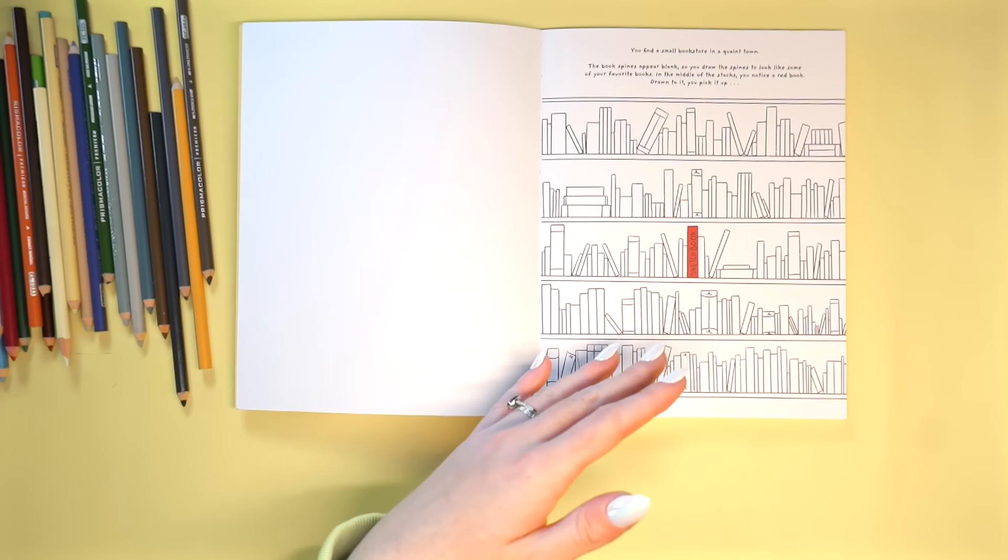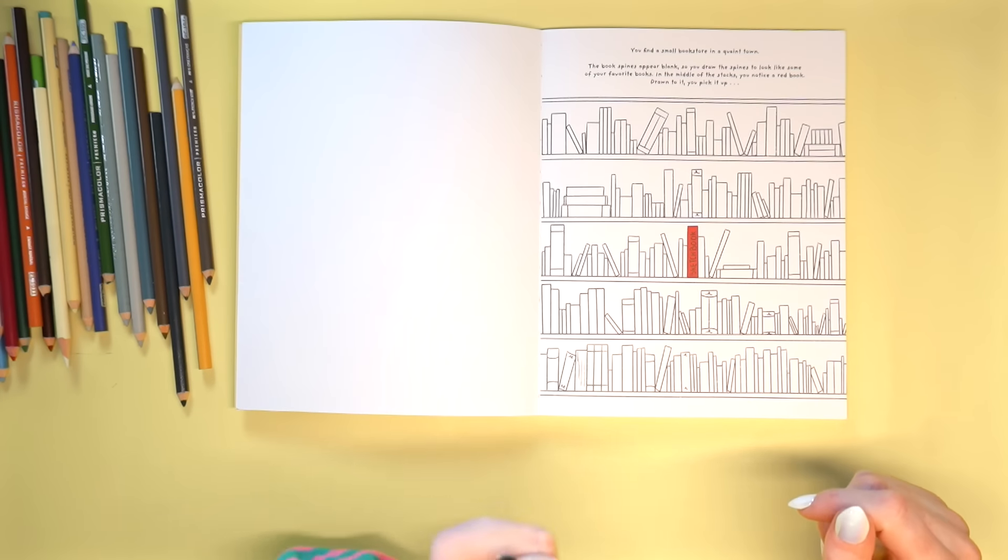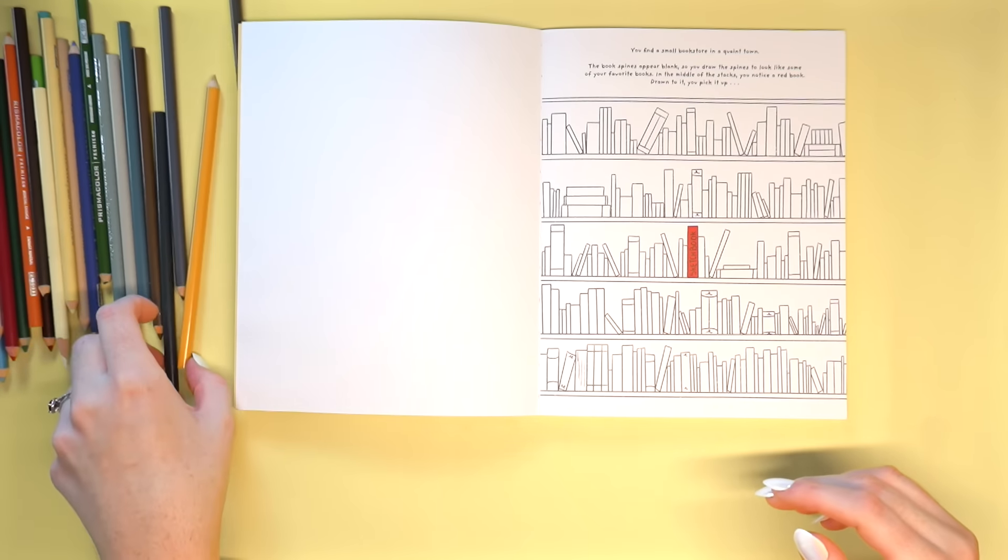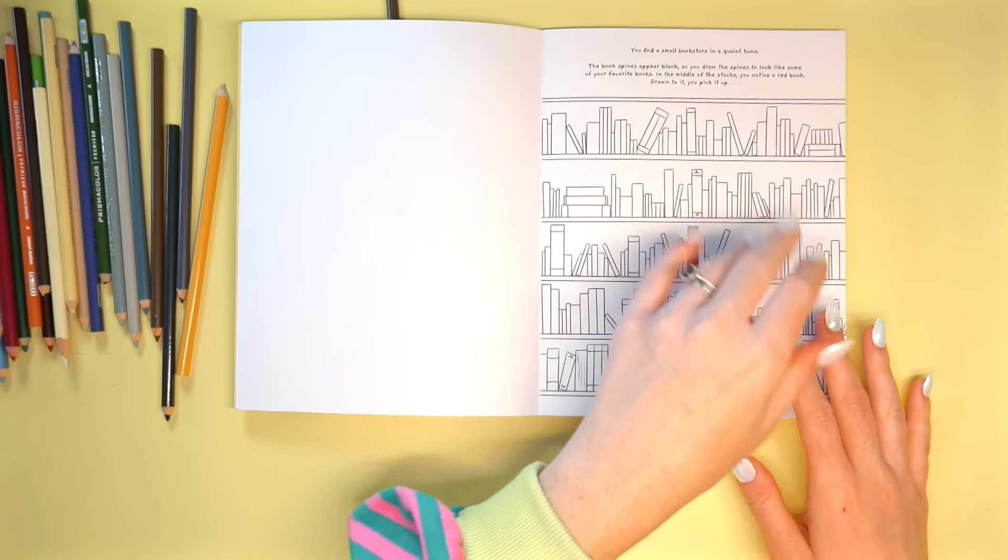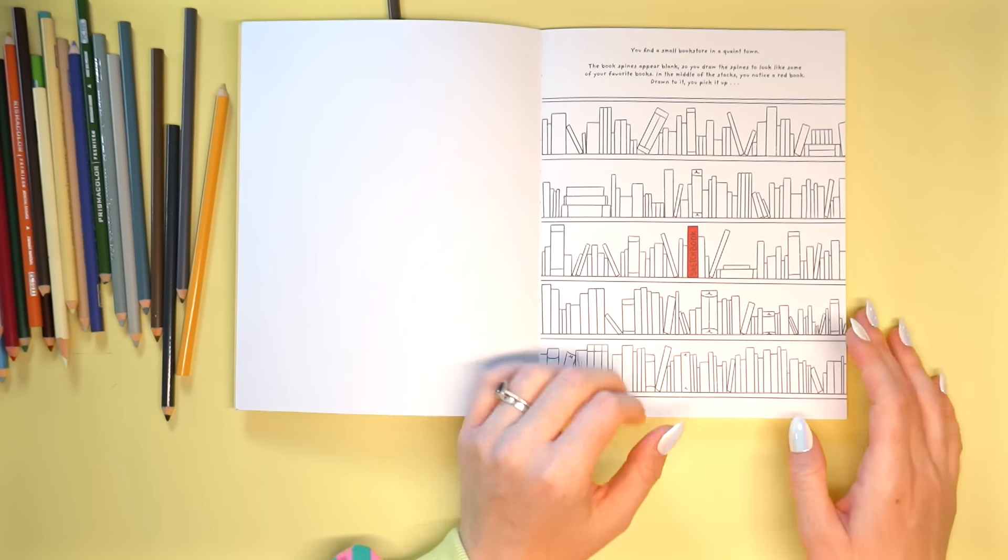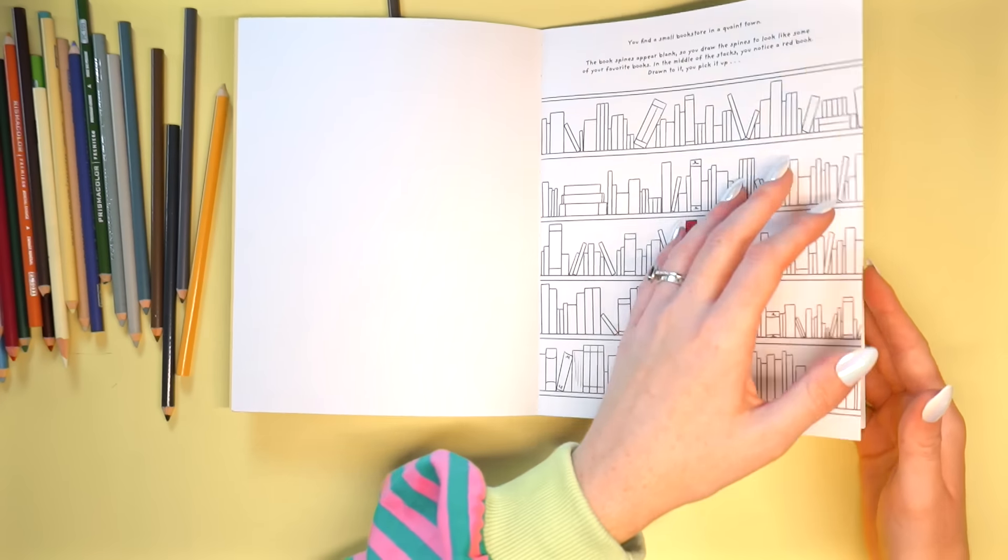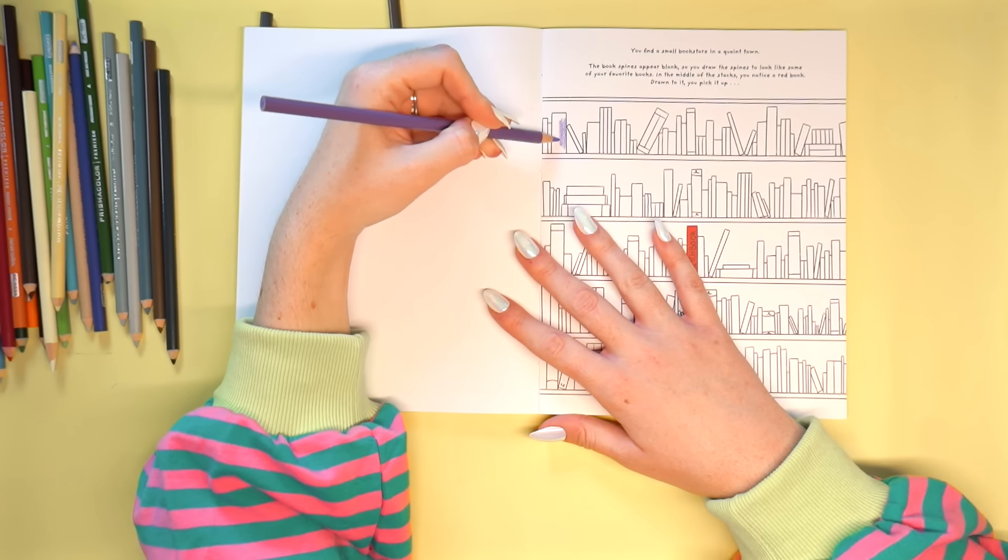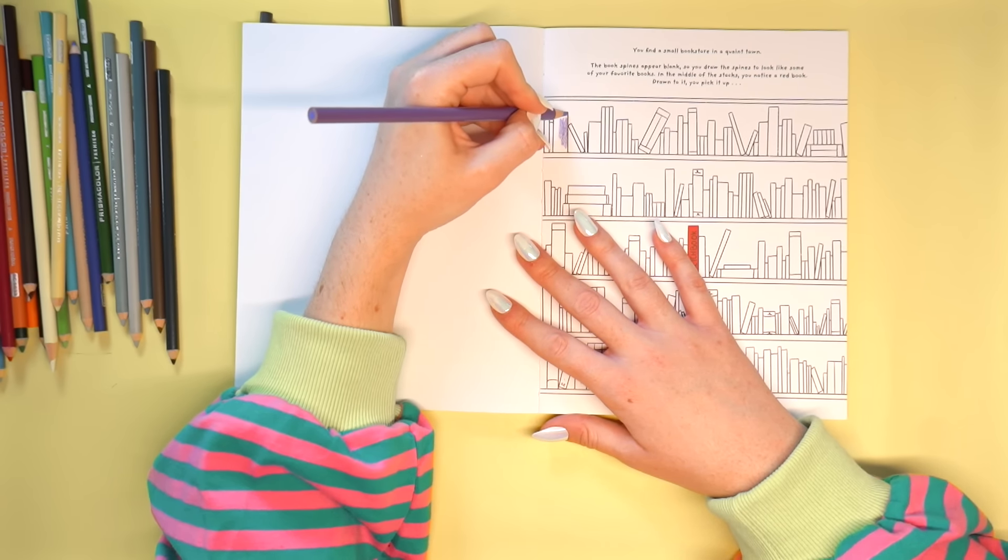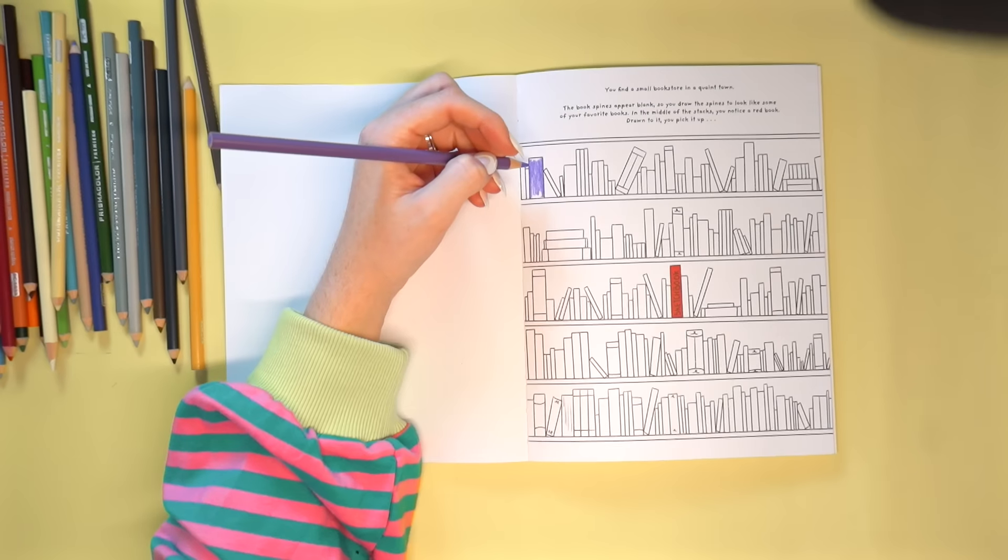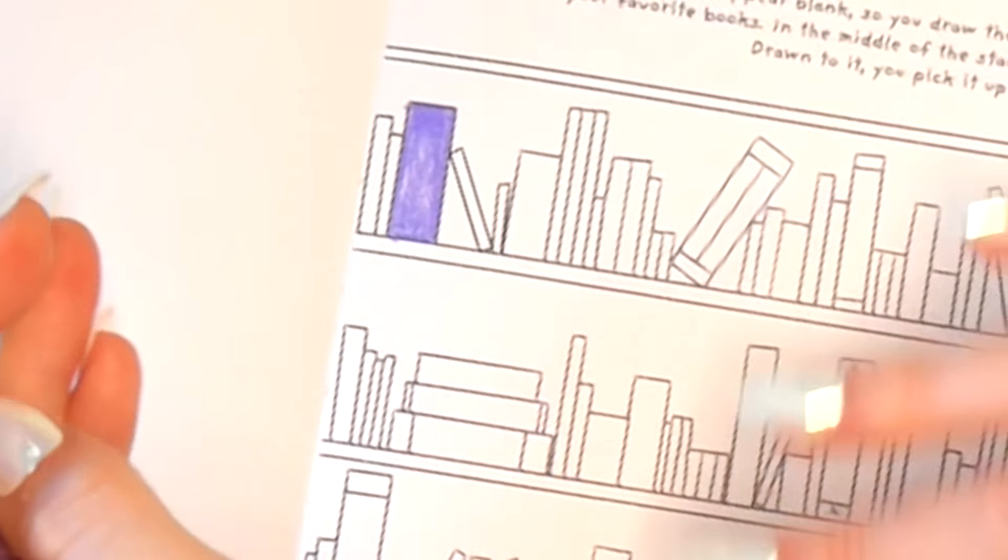This is the very first page. You find a small bookstore in a quaint town. The book spines appear blank so you draw the spines to look like some of your favorite books. In the middle of the stacks you notice a red book. Drawn to it, you pick it up. The prompt on this page is you have to color in all of the books. I personally was like, I'm gonna color in some of the spines of my favorite books because I like books, I like to read.